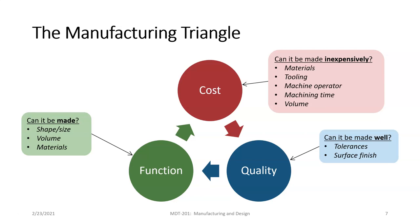Part cost means: can it be made inexpensively? We want the part to be made as inexpensively as possible while still meeting the requirements of its function. When we look at the cost aspect, we have to address materials — how expensive are the materials, how expensive is the tooling, how expensive is the machine operator, whether they're highly skilled or lightly skilled, how much machining time is required, and what is the volume of production.